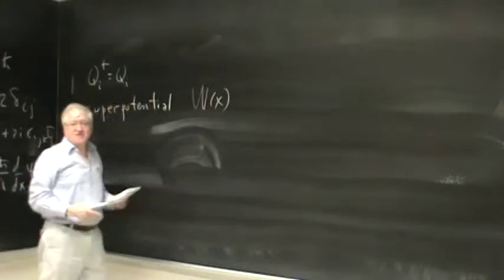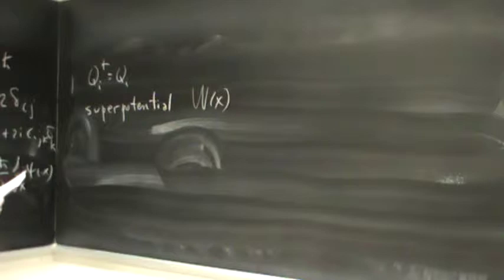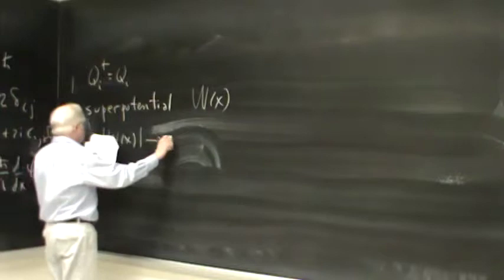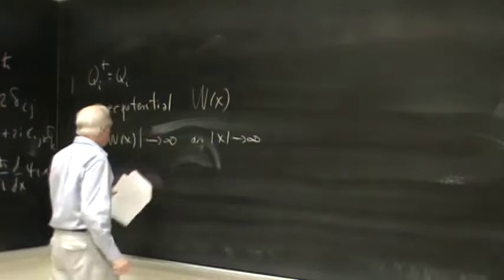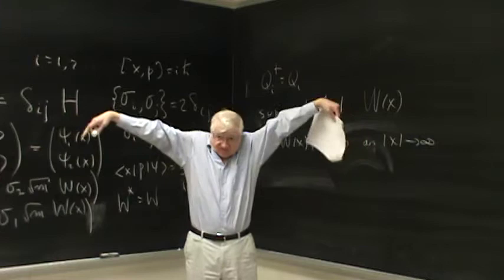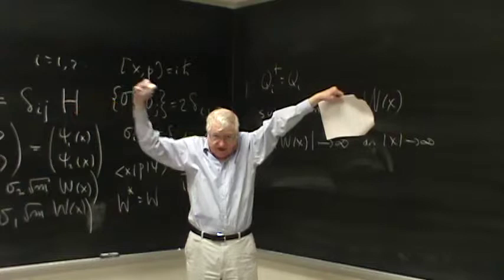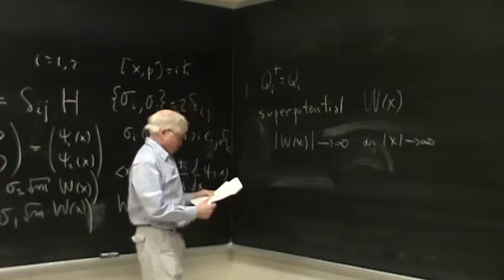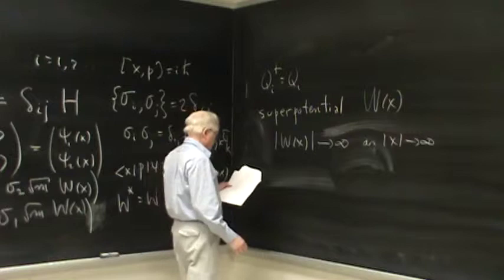Sorry for these digressions. The superpotential W(x): we'll start out by saying that W(x) goes to infinity as x goes to infinity. We want that because if we have a potential that looks like this, the spectrum is discrete. If instead the potential looks otherwise, you've got a continuous spectrum above the highest point of potential.